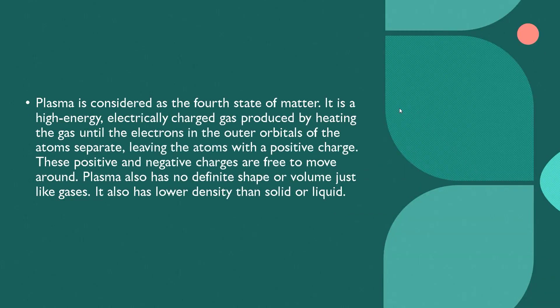Plasma is considered a fourth state of matter. It is a high-energy, electrically charged gas produced by heating the gas until electrons in outer orbitals of atoms separate, leaving the atoms with a positive charge. These positive and negative charges are free to move around. Plasma also has no definite shape or volume, just like gases, and has lower density than solid or liquid.